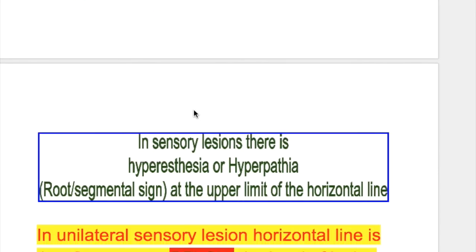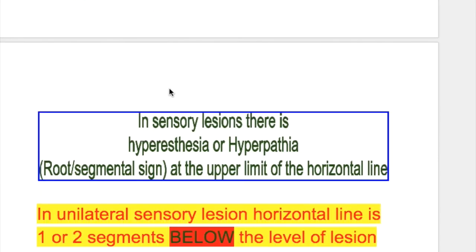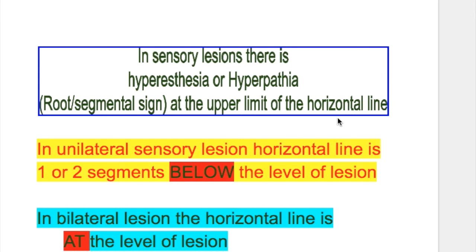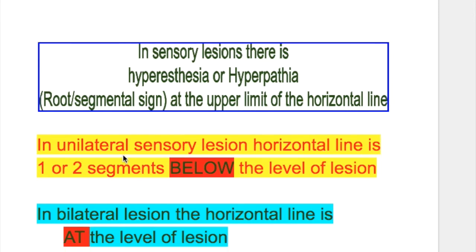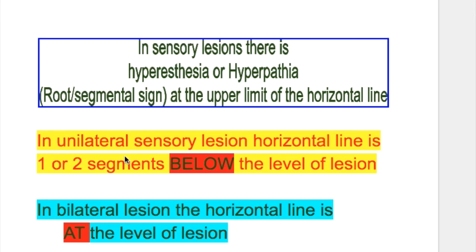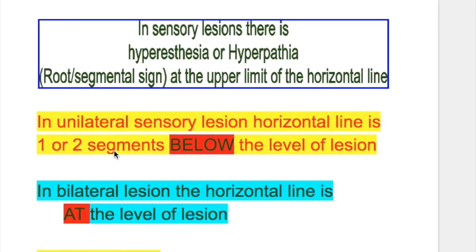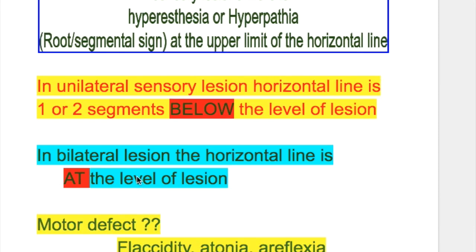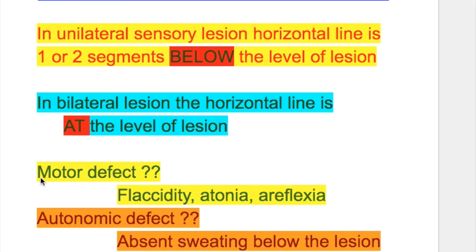What is the upper limit of sensory defects in spinal cord lesions? There is hyperesthesia or hyperpathia at the upper limit of the horizontal line. In unilateral sensory lesions, the horizontal line is one or two segments below the level of the lesion. In bilateral lesions, the horizontal line is at the level of the lesion.